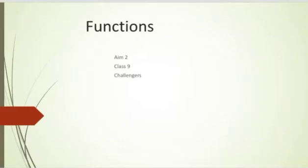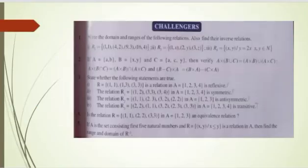Hi everyone, welcome. Today we are looking at Functions - Aim to Challengers Class 9. The first question: write the domain and range of the following relation, also find their inverse relation. R2 is equal to {(1,1), (4,2), (9,3), (16,4)}. Now let's see the answer.